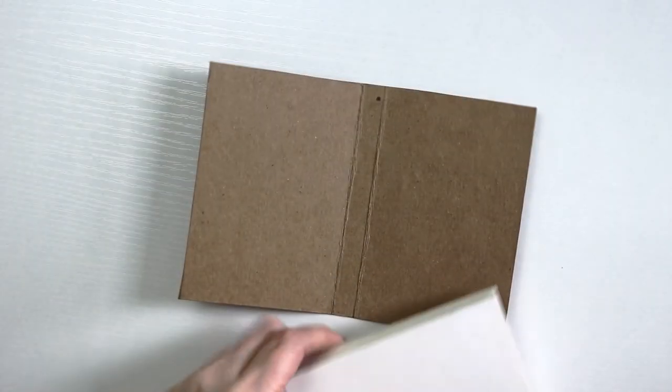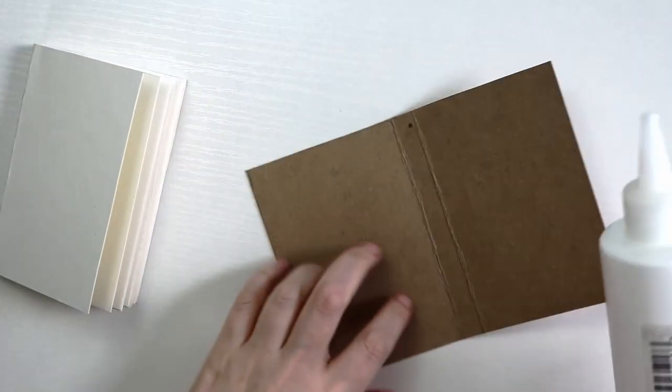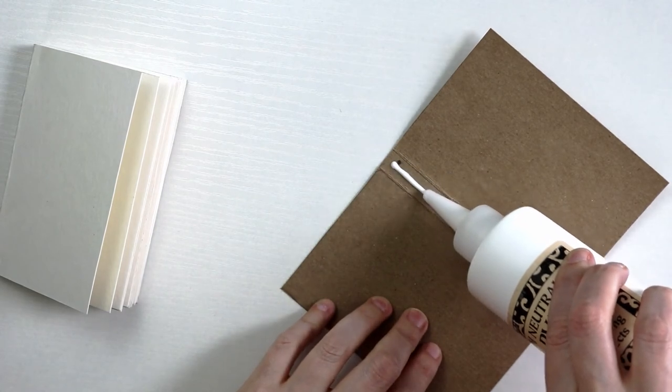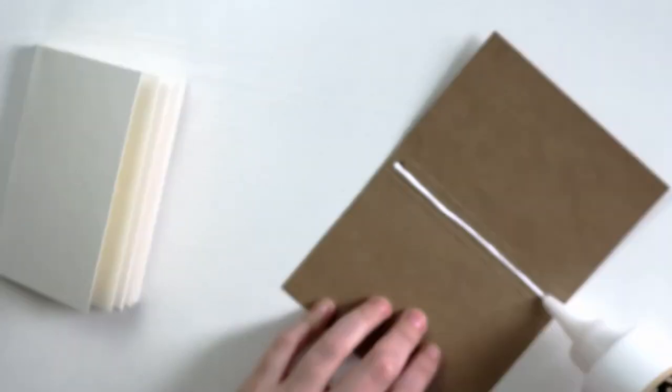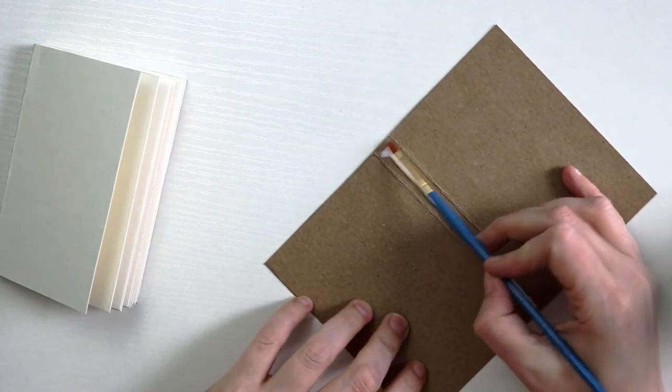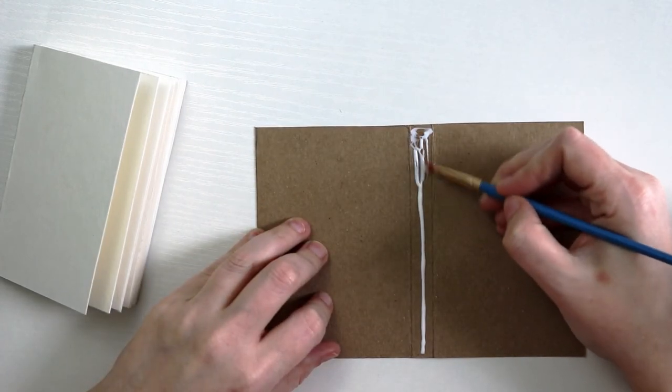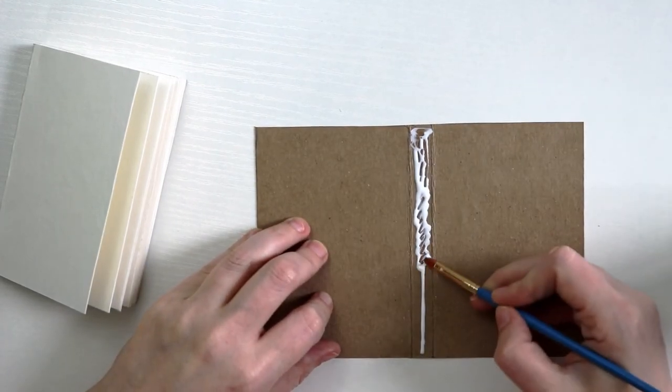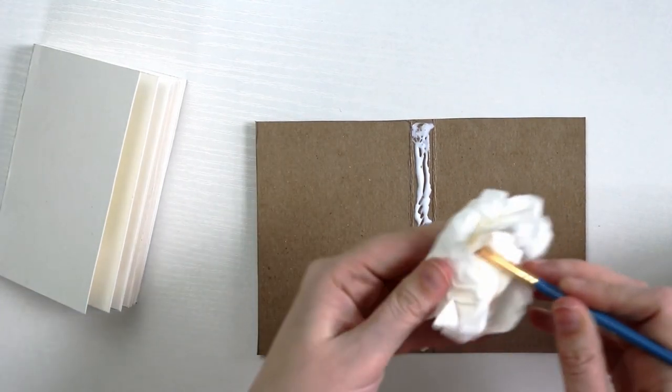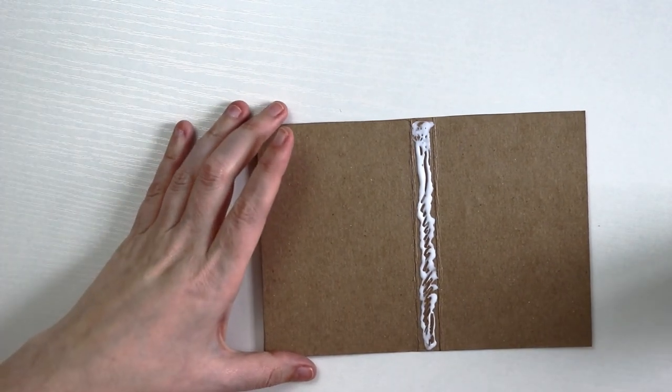Now we're going to take our block of pages and our glue and I'm just going to put a line of glue down the spine. You don't want too much because you don't want it to squish out along the edges and get stuck to your paper. So I'm just going to spread it real thin and hopefully have it prevent less squishing. I don't know if that's the right word. I'm going to have this paper towel nearby to wipe off anything that does get squished out.